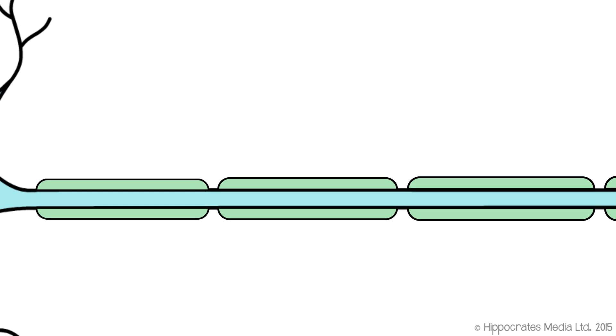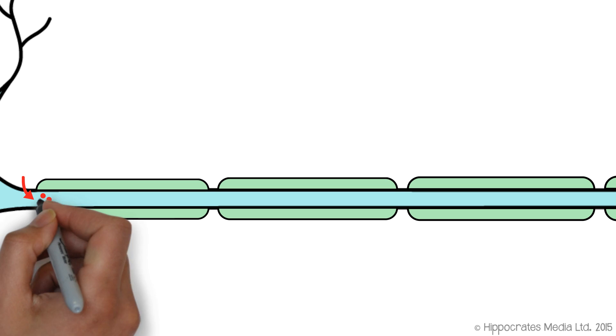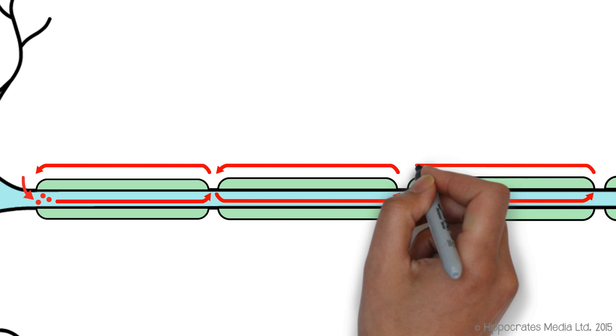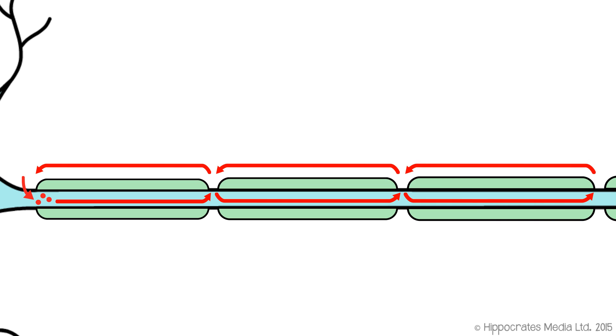If we think about the propagation of action potentials down a myelinated fiber, what we're saying is that the sodium comes in at the node of Ranvier, positive ions flow along the fiber to the next node of Ranvier, which reinforces the signal, and then it carries on to the next one and the next one and the next one. Because the sodium is only flowing in at the nodes of Ranvier, and then you've got a big gap until the next node of Ranvier, it's almost as if the action potential is jumping from node to node to node. And that's why the conduction of action potentials in a myelinated axon is referred to as saltatory conduction. Saltatory means jumping, so it's like the action potential jumps from node to node.